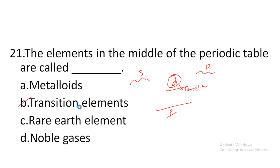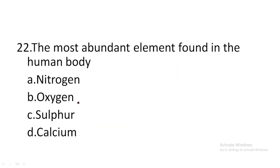Next: the most abundant element found in the human body — option A: oxygen, option B: sulfur, option C: calcium. The most abundant element found in the human body is oxygen.